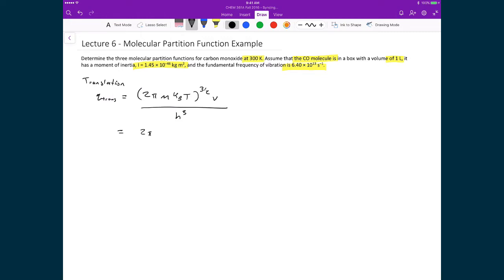We have 2 pi. In this case, the mass of carbon monoxide, well if we go to our periodic table, carbon has a mass of 0.107 AMUs. Oxygen has a mass of 15.999 AMUs. And then each AMU is 1.66 times 10 to the minus 27 kilograms. So there's the mass of carbon monoxide. We're going to multiply that by the Boltzmann constant, 1.381 times 10 to the minus 23. We're going to multiply that by the temperature, 300 Kelvin. All of this is raised to the power of 3 halves. Multiply that by the volume, which is equal to 1. And we'll divide this by Planck's constant, 6.626 times 10 to the minus 34, raised to the power of 3.